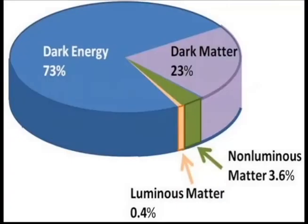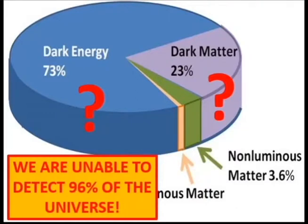What is our universe made of? It appears that the matter that we can detect is less than 5%. There's an additional 23% which we call dark matter, which we've never detected. We just surmise that it's there because of the amount of gravity that we can detect. And then there's a relatively new source of energy that we call dark energy because we have no idea what it is, except it seems to be pushing our universe out faster and faster at an increasing rate. That means 96% of the universe we haven't been able to detect. That's not a very good record for mainstream science.